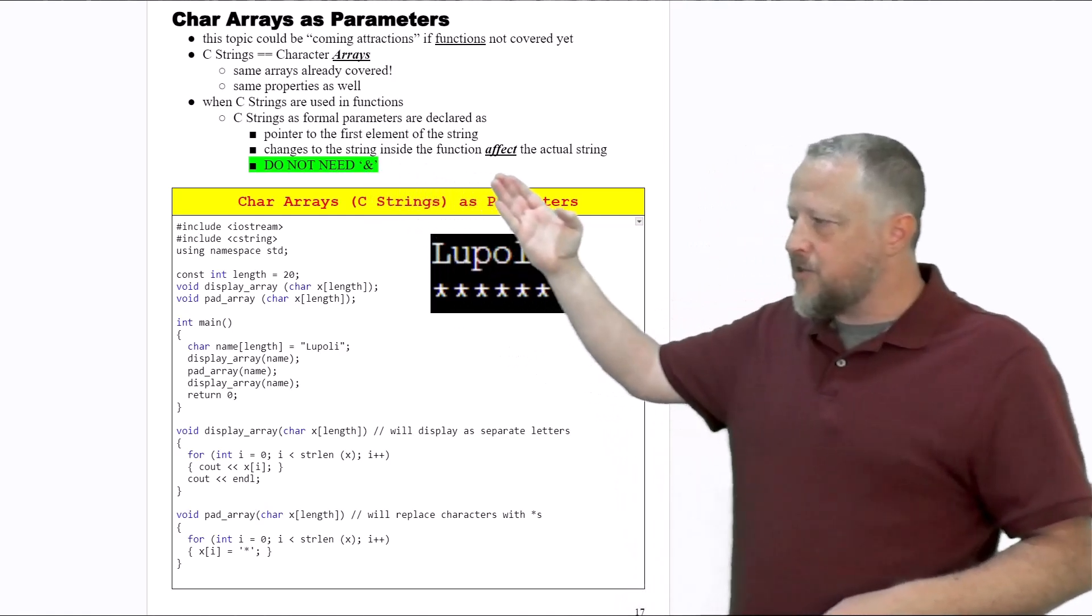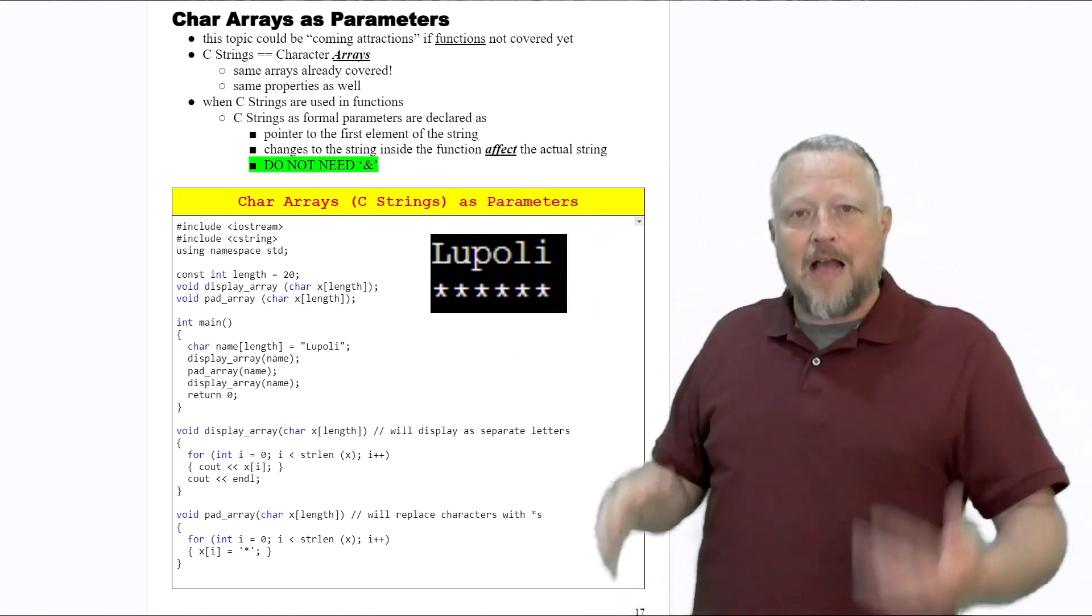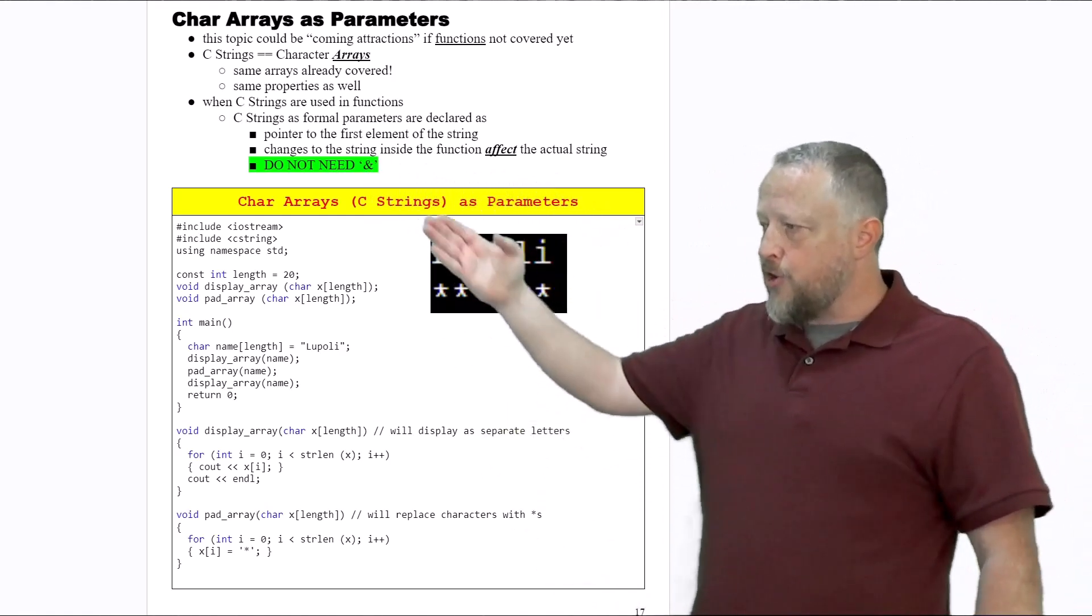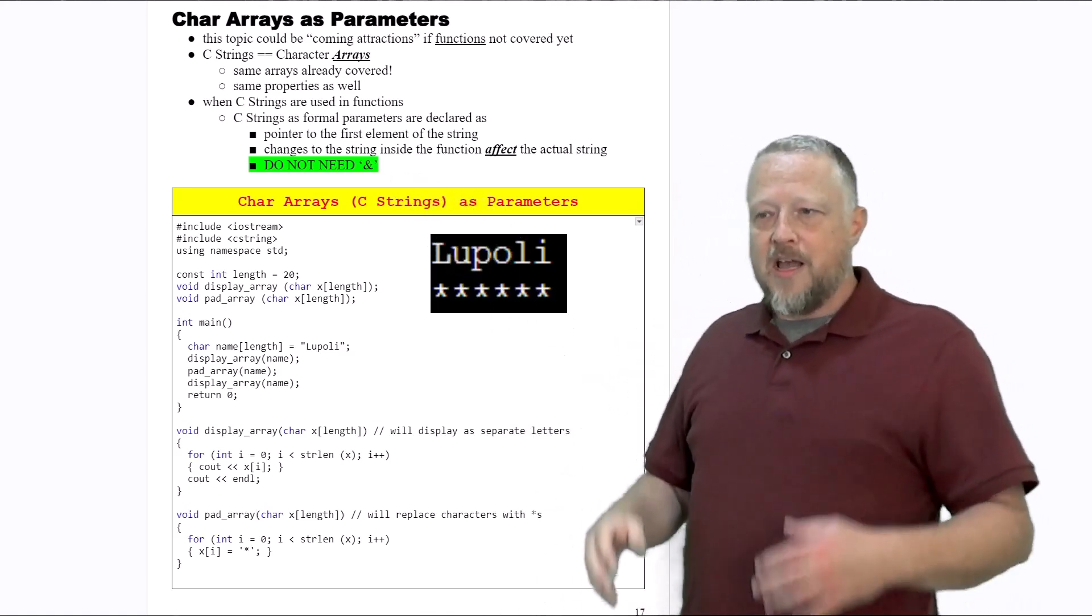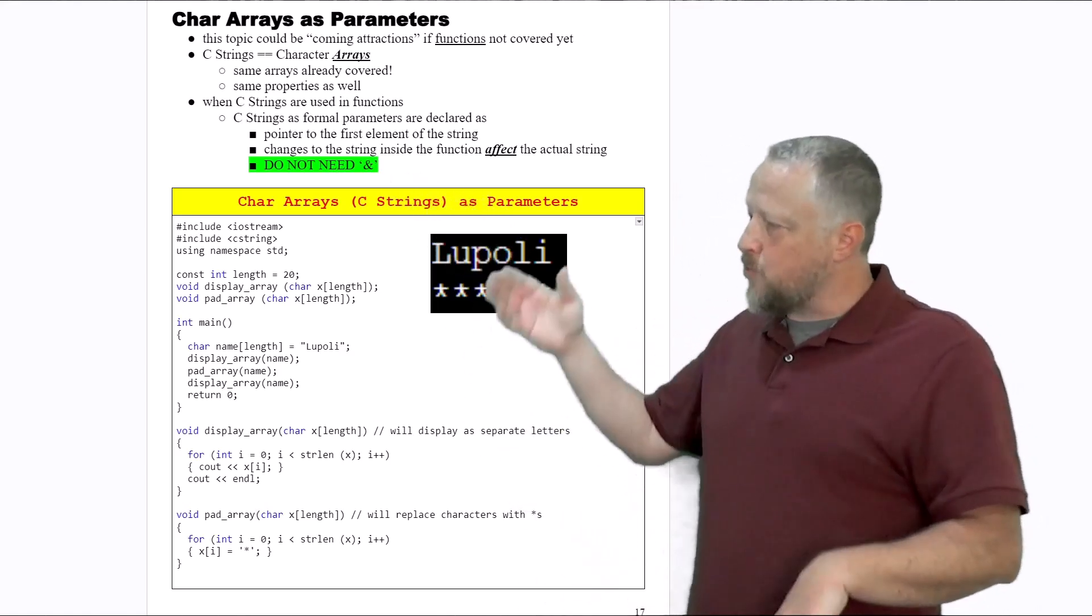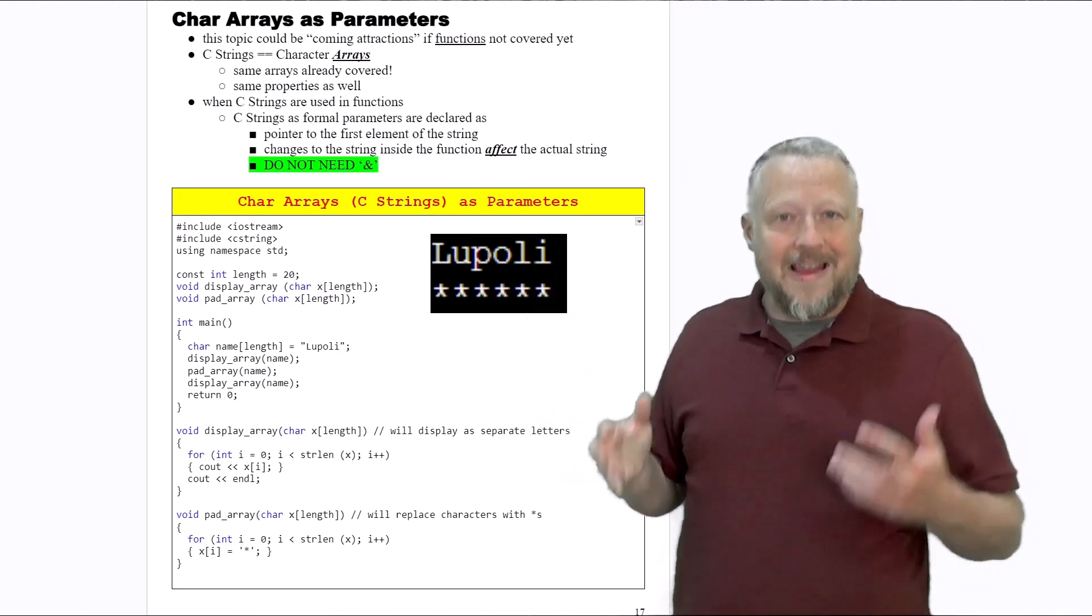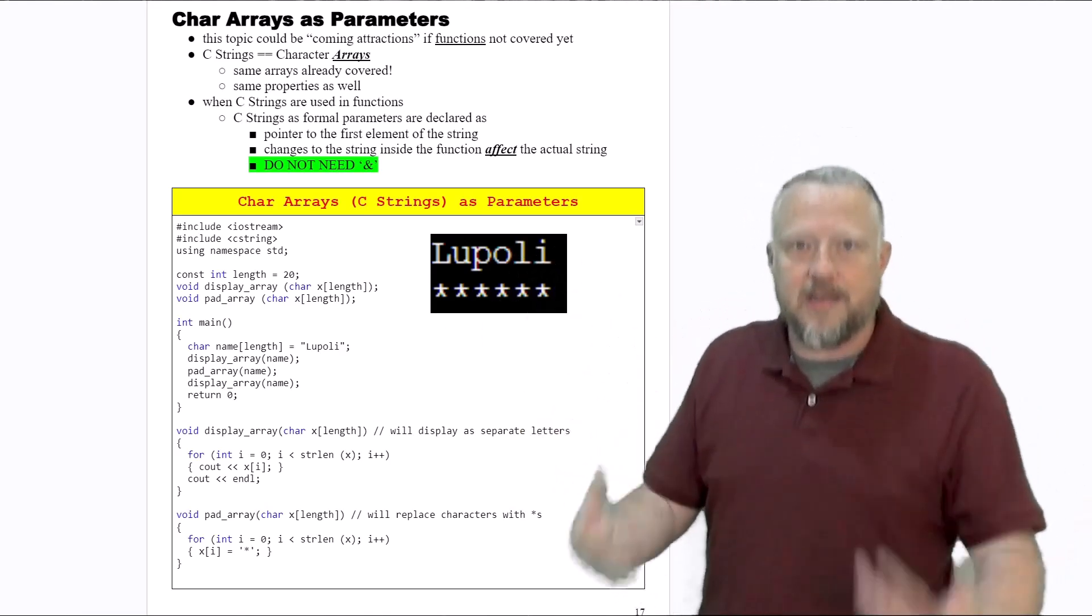Changes to the string inside the function affect the actual string, and there's no need for the ampersand. The ampersand gives us direct access. Well, with an array in C and C++, it already gives us direct access.